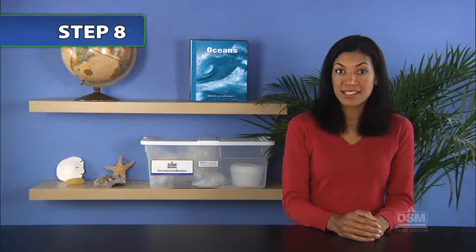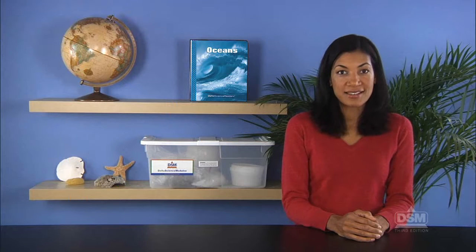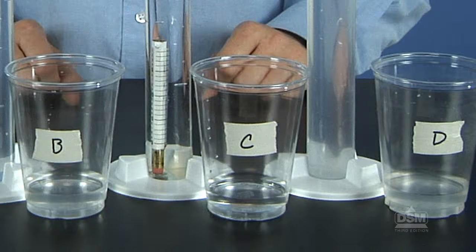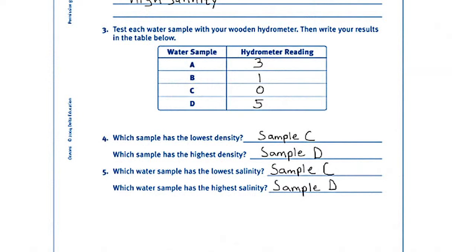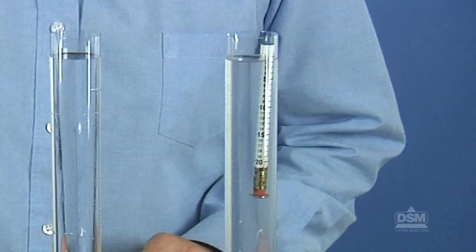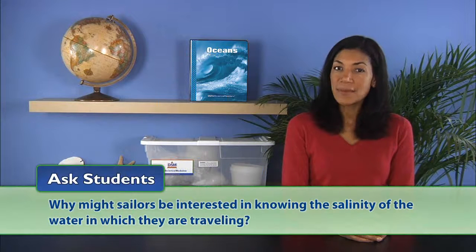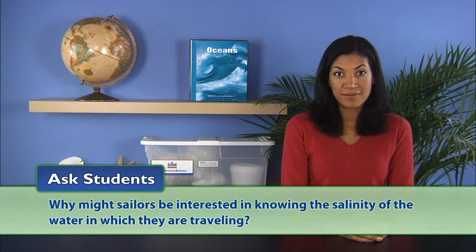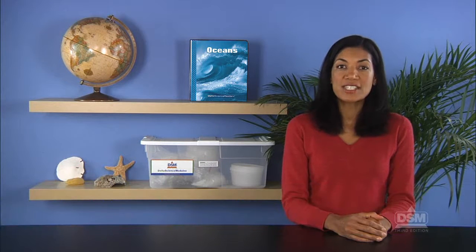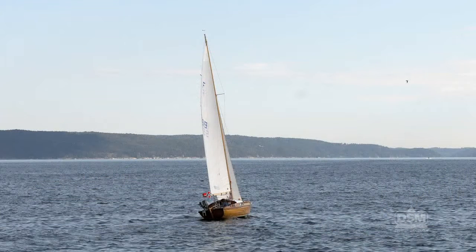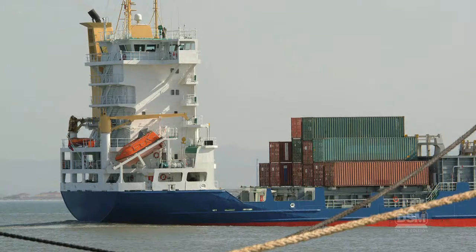When teams have finished testing, review their results as a class. Students should have discovered that Sample C, the plain tap water, had the lowest density and lowest salinity, and that Sample D, which had the most salt, had the highest density and highest salinity. Then ask students why sailors might be interested in knowing the salinity of the water they are traveling in. Help students understand that the saltier the water, the higher their boats will float, and the higher the boats float, the more weight they can carry without sinking.